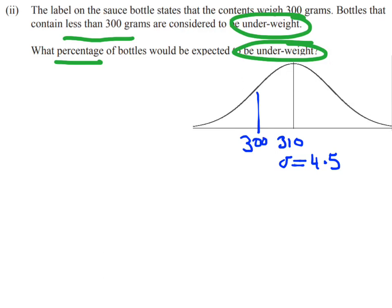So there's my 300 and less than 300 I'm going to shade in the area below that. So that's the probability I'm trying to find.